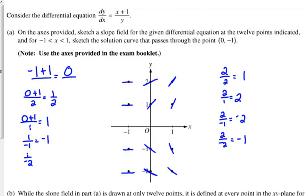That's the first part they want. Then they say sketch the solution curve that passes through the point (0, -1). I know why I'm at negative 1, because it says to go from negative 1 not including negative 1. That's why the answer key has an open circle right there.